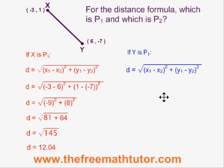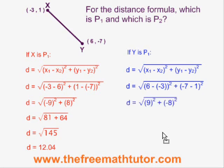If we plug the values into the formula in the opposite order, so that y is point 1, it looks like this. x1 and y1 are 6 and negative 7, x2 and y2 are negative 3 and 1. When we simplify, we end up with 9 squared and negative 8 squared, which still gives us 81 plus 64. We have the square root of 145 is our distance and it is still equal to 12.04.